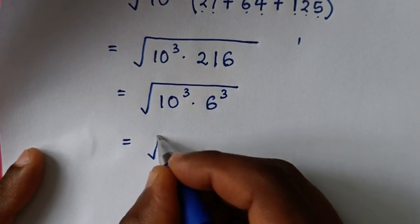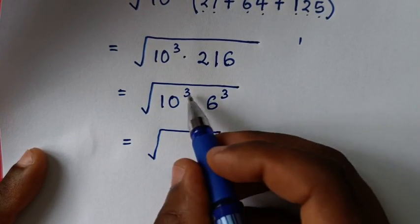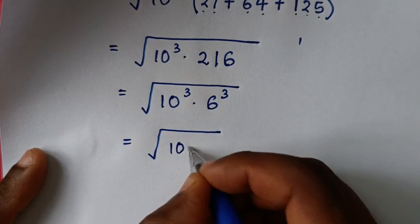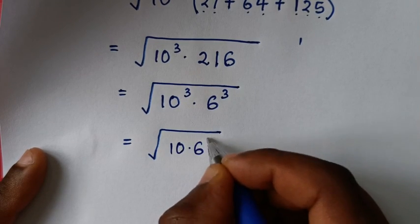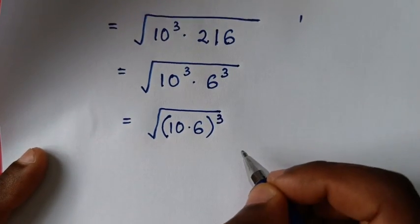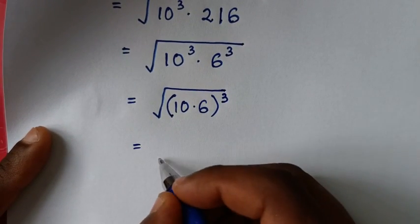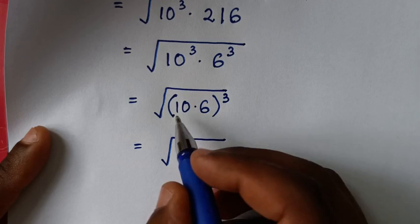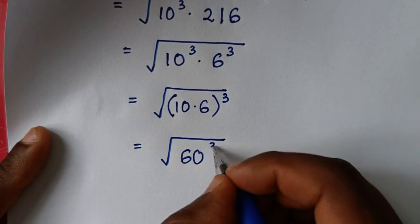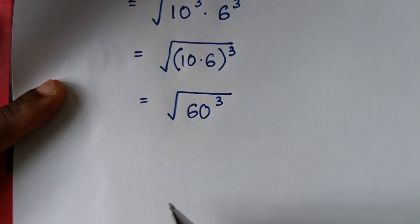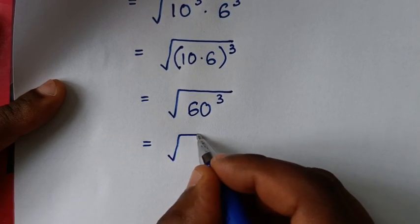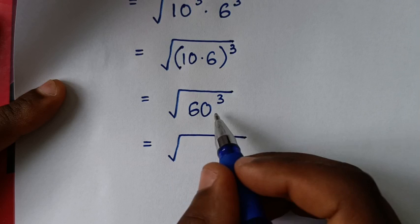Then it will be equal to the square root of 10 to the power 3 times 6 to the power 3. Since the power of 3 is common, we multiply the bases: 10 times 6 is 60. So it becomes the square root of 60 to the power 3.